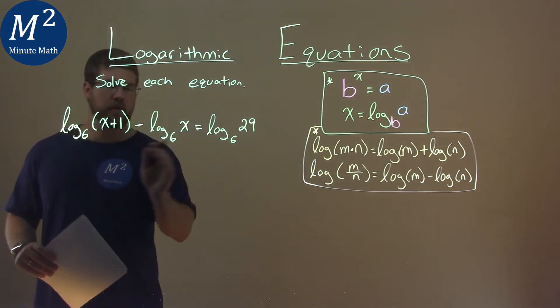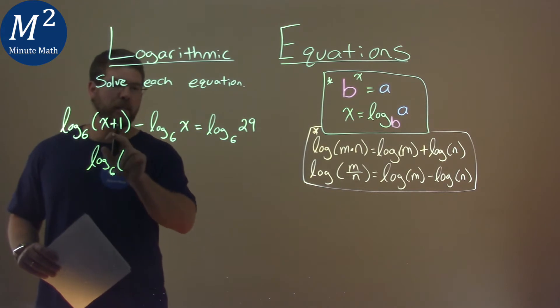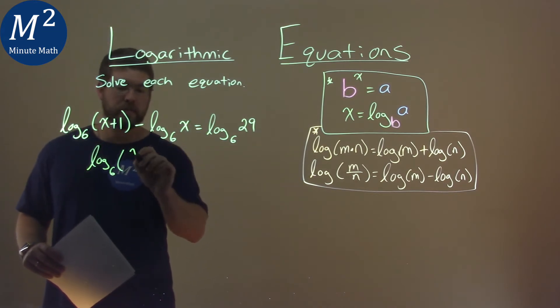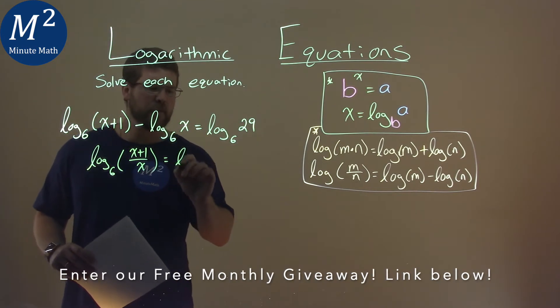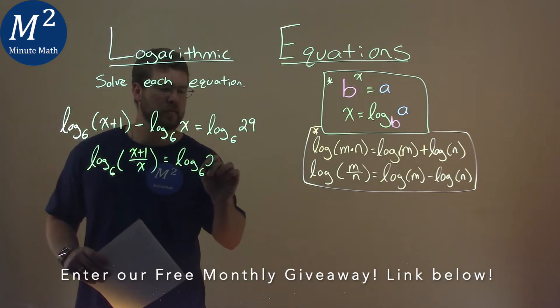We're going to take this part right here on the left hand side, log base 6 now, and we're going to combine these two insides with division. x plus 1 over x. And that's equal to log base 6 of 29.